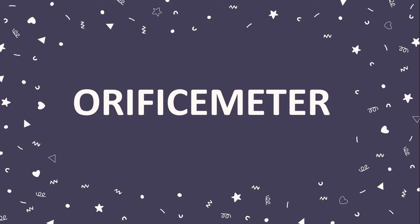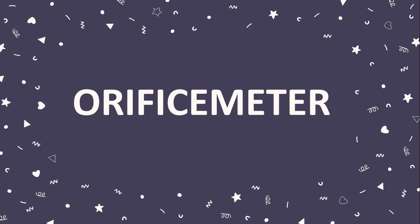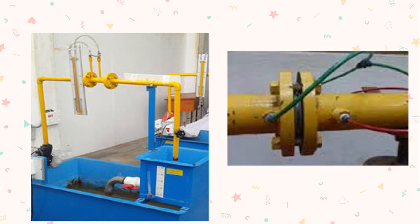The word 'orifice' technically means a hole or an opening. So an orifice meter is a device that has an orifice plate inside it with an orifice opening. If you see the diagram, the outer part is the orifice meter body, and inside there is another hole or opening — that is the orifice. The orifice plate looks like two concentric circles: the outer one is the plate and the inner hole is the orifice.